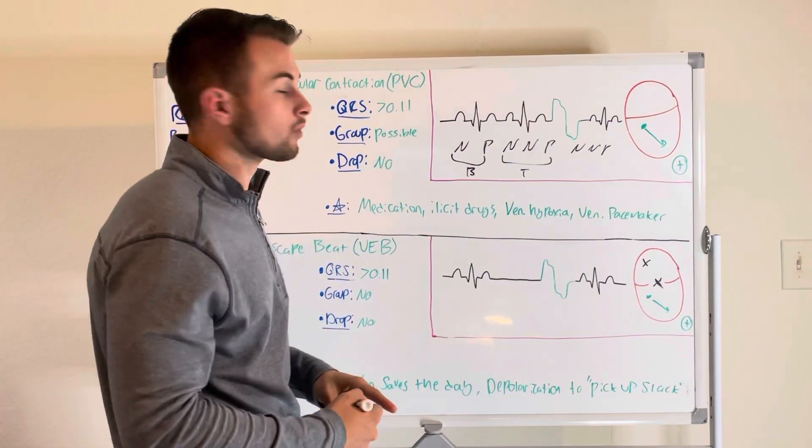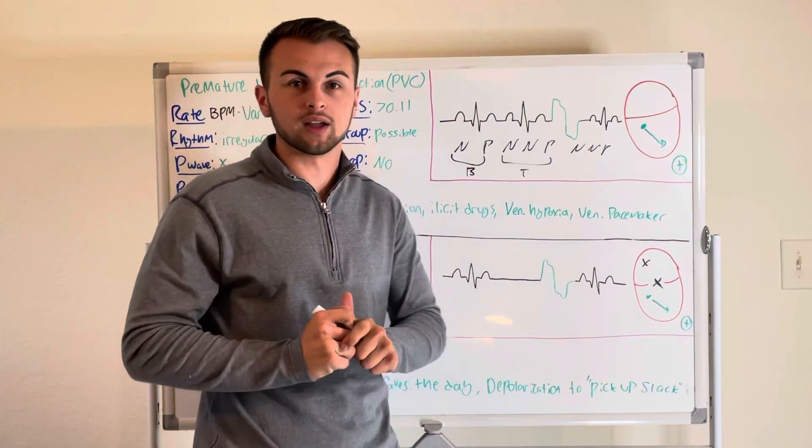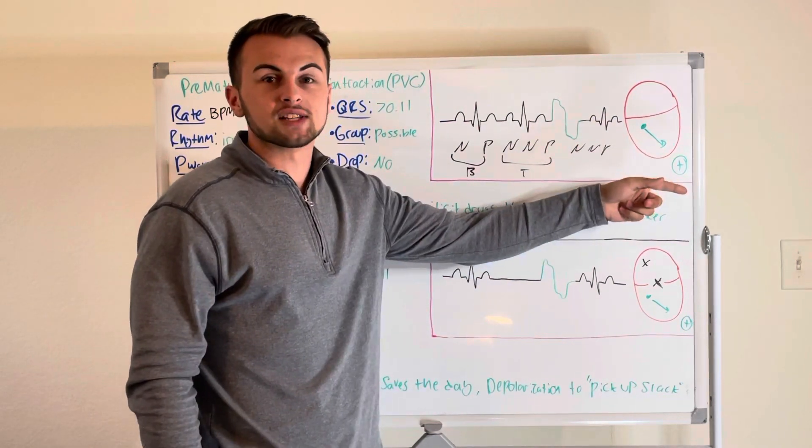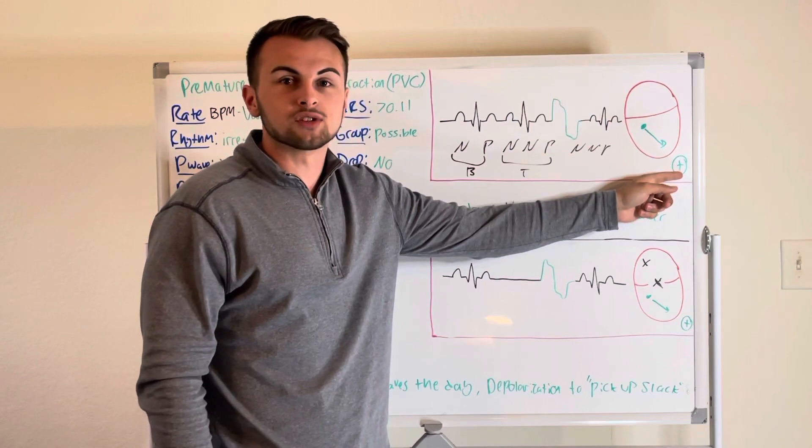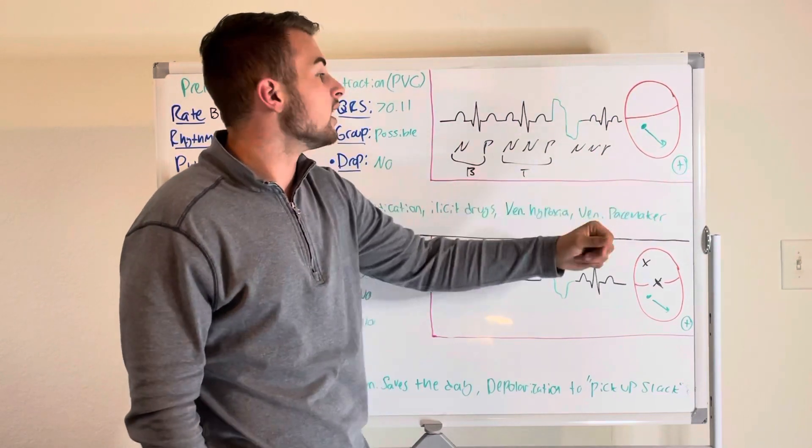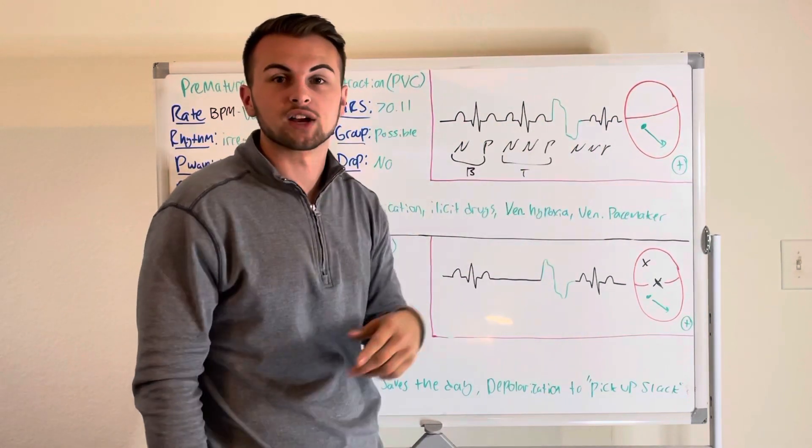So why does the PVC look this way? If there is a positive depolarizing impulse that begins in the ventricle and travels towards our positive lead two, this is a good thing. We say that it is a positive deflection.